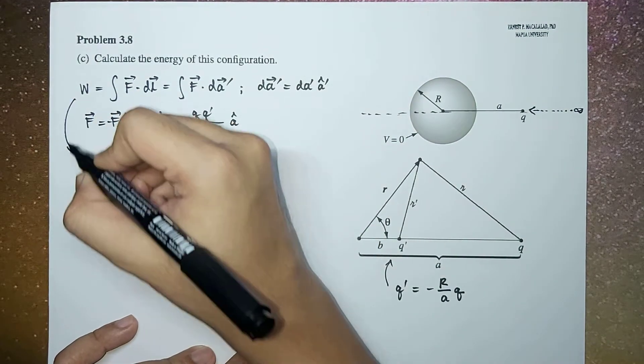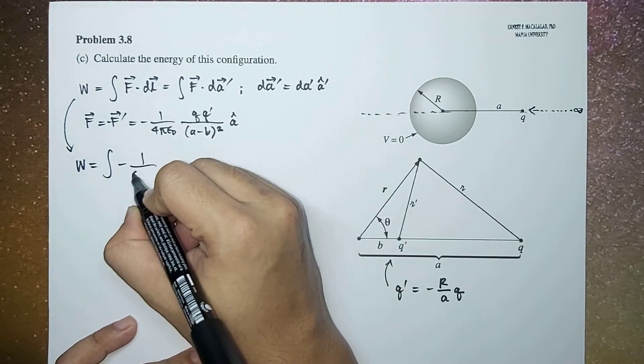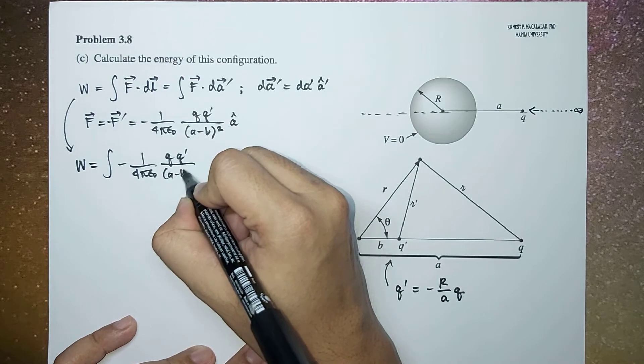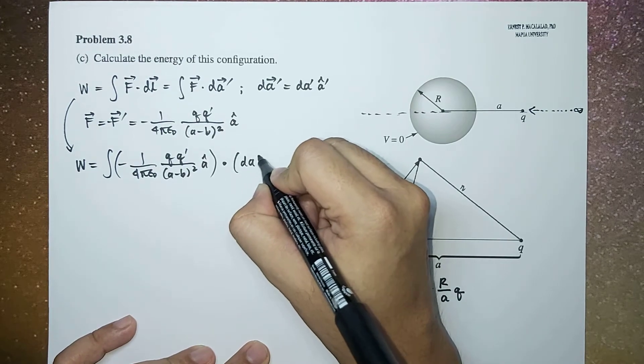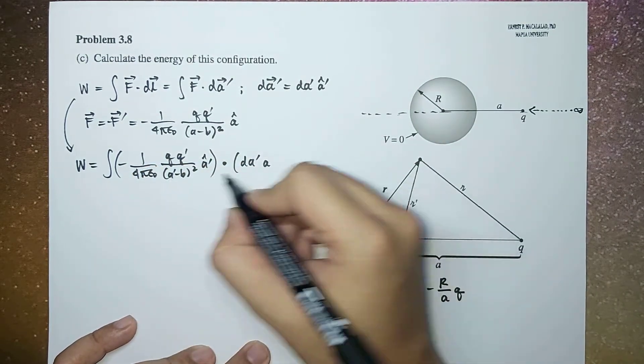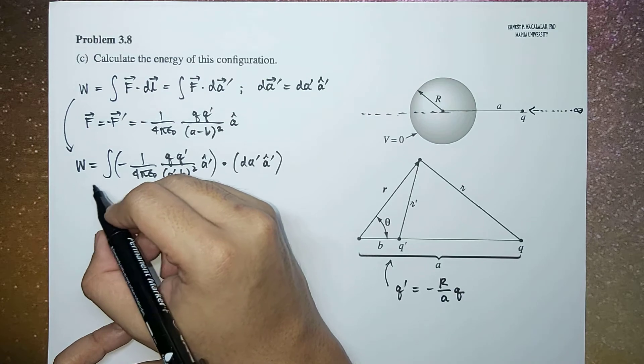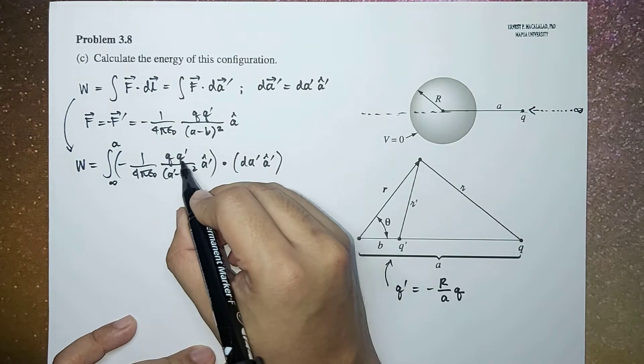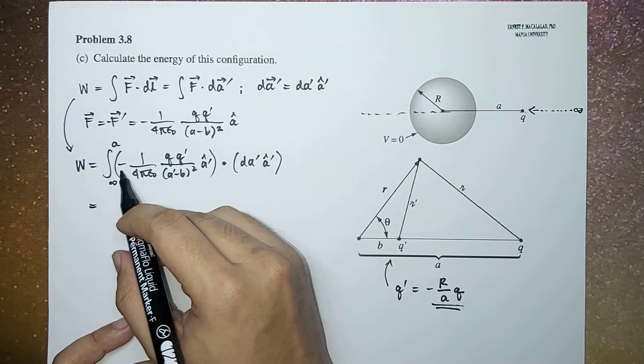Therefore the work done will now be equal to integral of negative 1 over 4 pi epsilon naught times q q prime over (a minus b) squared, a hat dot da prime. This should be a prime because we're just going to change variables. da prime would be integrated from infinity to a.